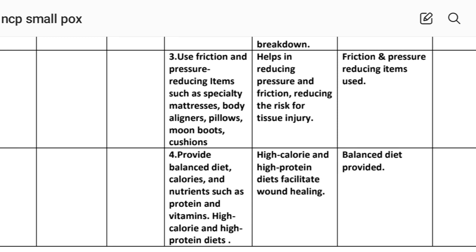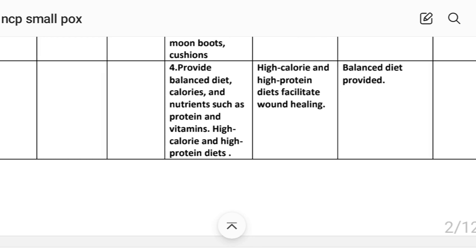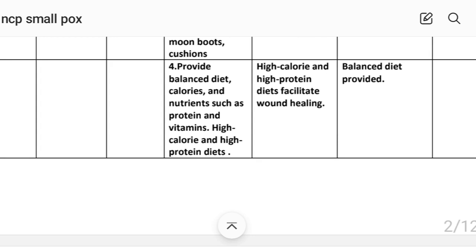Intervention number three: use friction and pressure-reducing items such as specialty mattresses, body aligners, pillows, moon boots, and cushions. Rational: helps in reducing pressure and friction, reducing the risk for tissue injury. Implementation: friction and pressure-reducing items used.